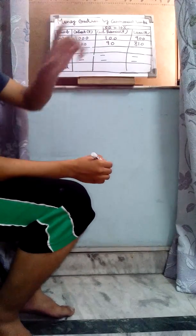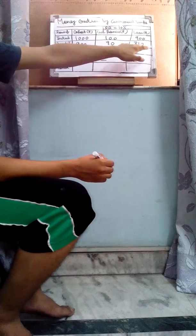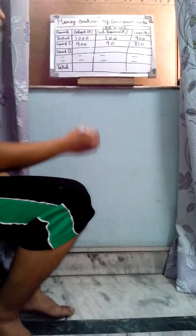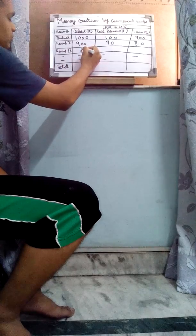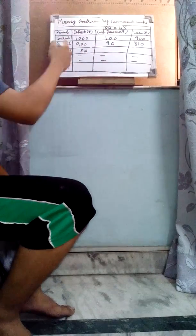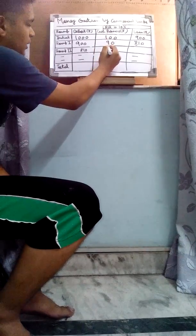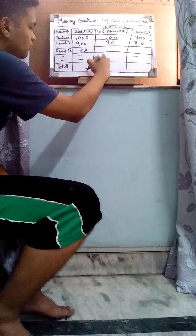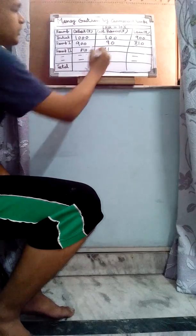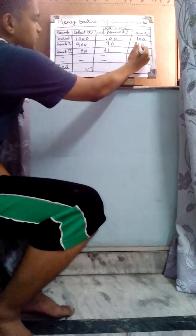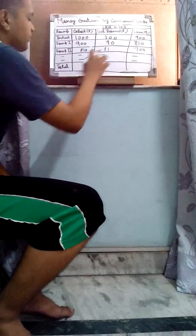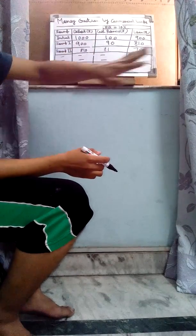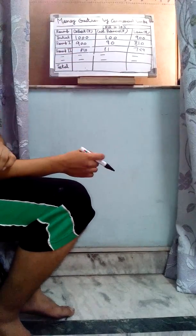Now the lender will receive this amount and will again deposit it in his or her bank account. We then take 10% of 810, which will be 81, and the remaining amount will be 729. So the lender will again receive rupees 729.